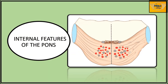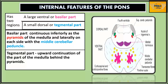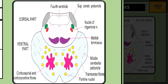We will now consider the internal features of the pons. A transverse section of the pons presents two regions: anteriorly, a large ventral part called the basilar part, and posteriorly, a small dorsal part called the tegmental part. The basilar part continues inferiorly as the pyramid of the medulla and laterally as the middle cerebellar peduncle. The tegmentum is the upward continuation of the medulla seen behind the pyramid.